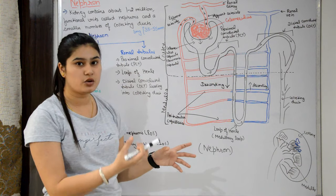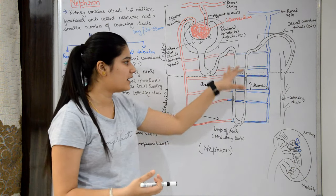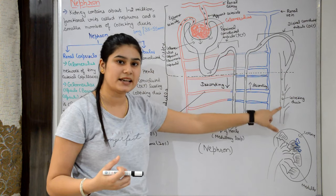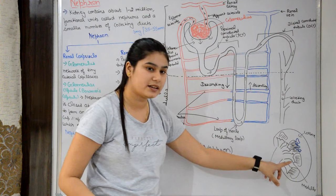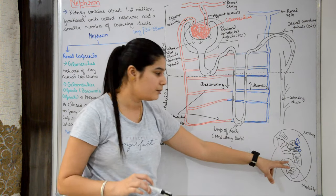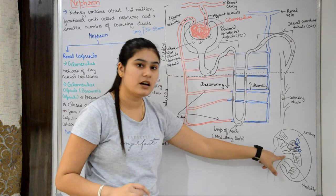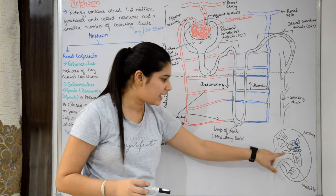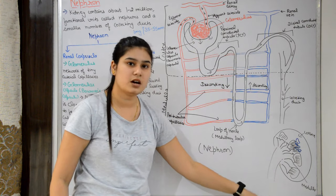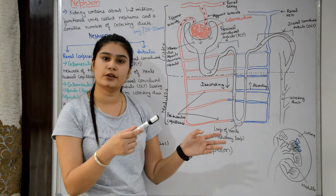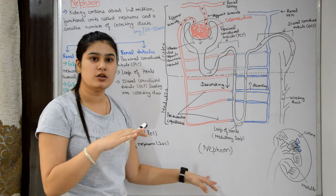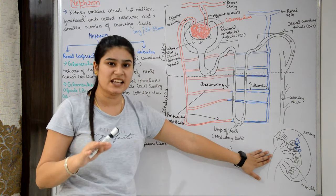Urine collected in the collecting ducts passes into the minor calyx, then the major calyx, then the renal pelvis, then to the urinary bladder, and finally out of the body. For more details on kidney anatomy, refer to my previous video where I explained the kidney in detail.